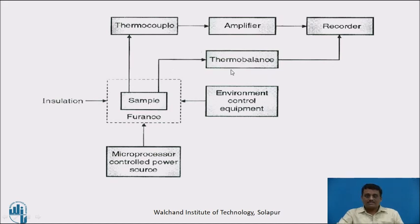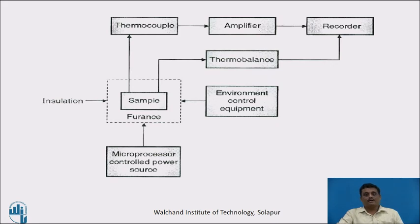The thermobalance receives signals that give us knowledge about the change in mass of a sample with respect to heating. The thermocouple receives signals that tell us the temperature values being applied to the sample. Both signals are sent to the recorder, which plots a graph between temperature and change in mass. By reading that graph, one can predict the purity of the sample.